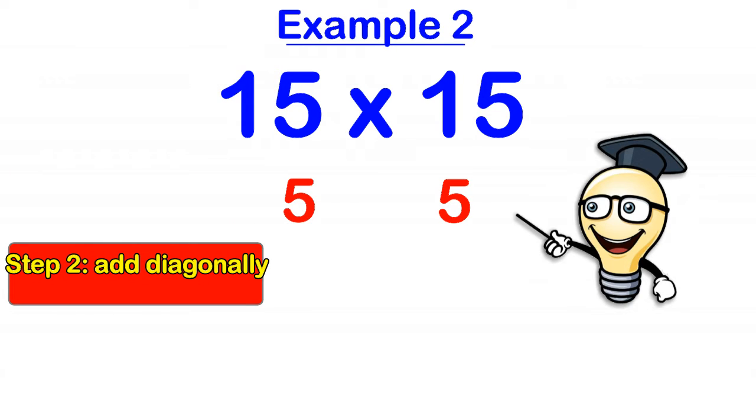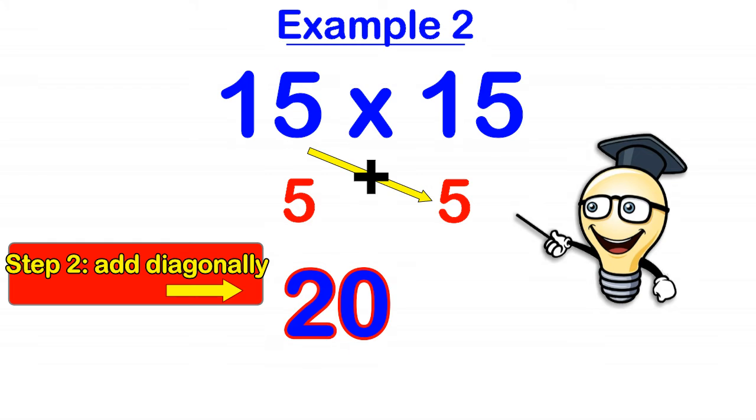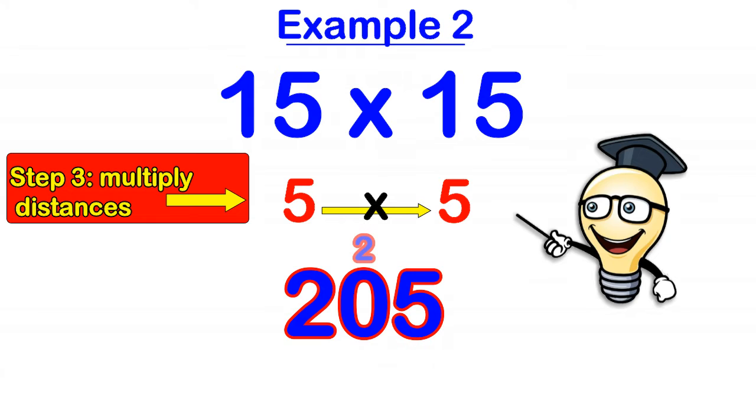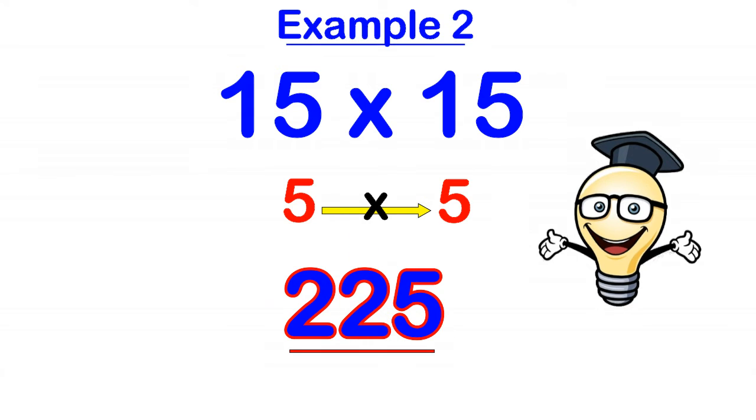Then we add diagonally. So 15 add 5 gives us 20. So that gives us the first part of the answer. Then we multiply these distances. So that's 5 times 5 is 25. Now, because we have a 2 digit number here, we put down the units first and we carry the 2. So that gets added to the 0. So that becomes 225.